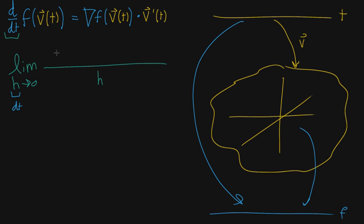So h sits on the denominator because you're thinking of it as dt. The numerator is whatever the change to this whole function is when you nudge the input by t. That means you take f of v of t plus h — that nudged output value — and wonder how different that is from f of v of t, your original value. This is just applying the formal definition of the ordinary derivative to your composition function. And a good place to start is to look back to the intuition I was giving for the multivariable chain rule in the first place.